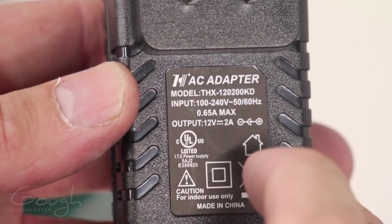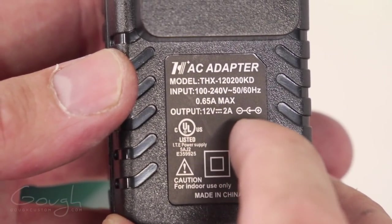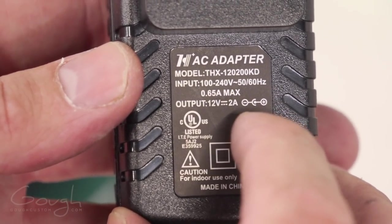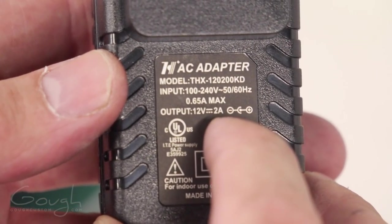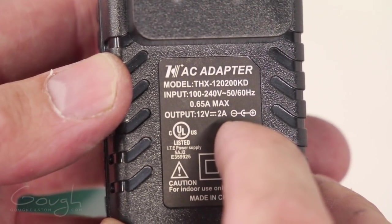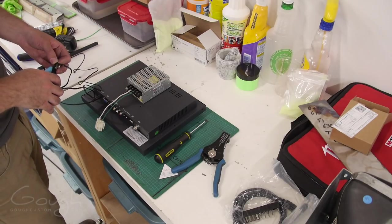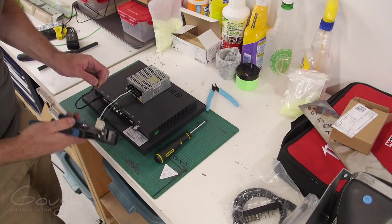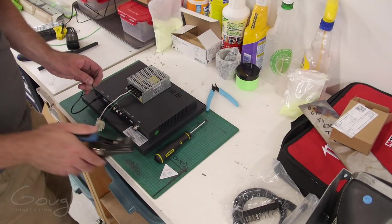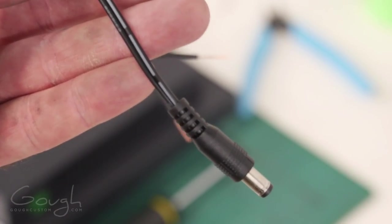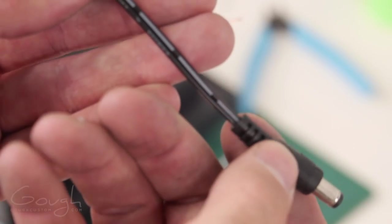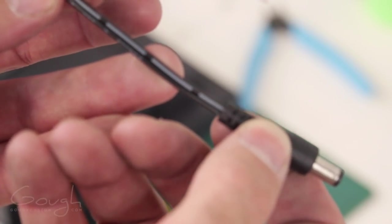So if you have a look right here on the back of the AC adapter, this little symbol here actually shows you the polarity of the barrel jack. So it's saying negative is the outside, positive is the inside.